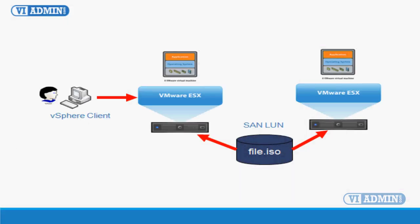ISO images can be stored in either a VMFS datastore or an NFS datastore, which allows you to share the ISO images across multiple ESX servers as long as the datastore is visible to the ESX server. When you connect via client device, the ISO is transferred over the network from your desktop CD ROM, so it's not going to be very fast. The host device is pretty fast but it's still reading from a physical CD ROM, which isn't as fast as reading from the hard drive on your ESX server. So the datastore ISO is your fastest option.